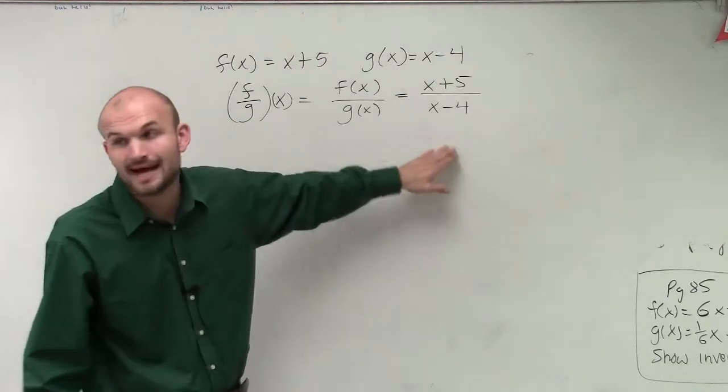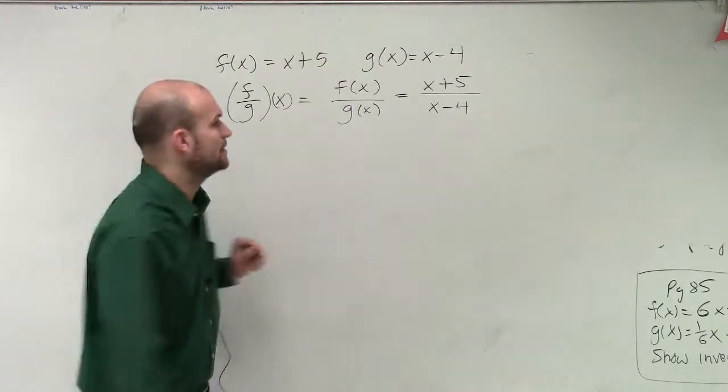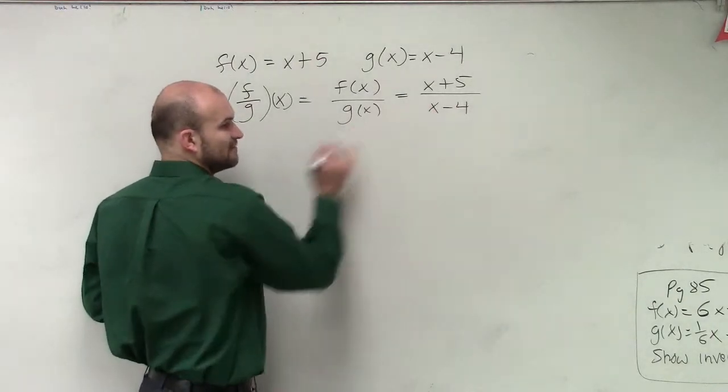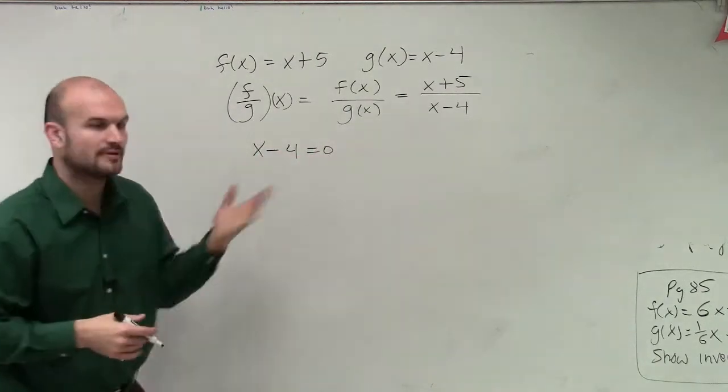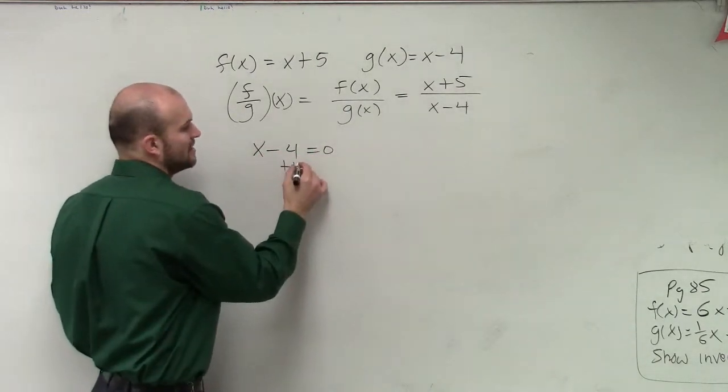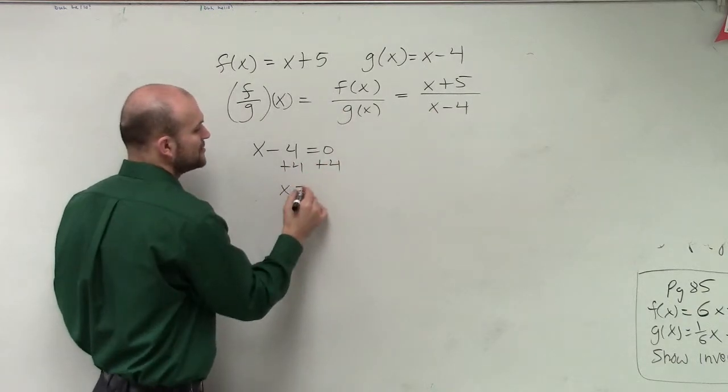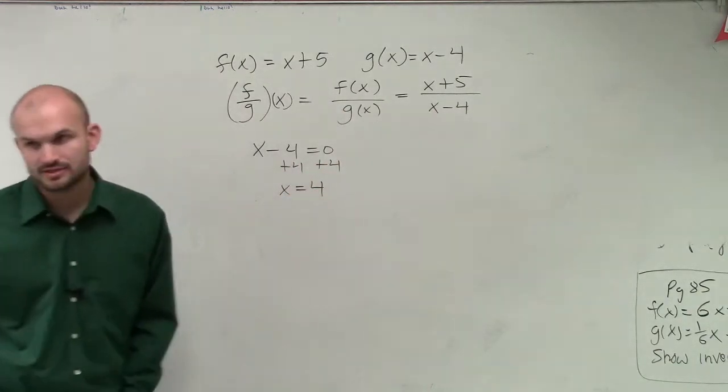And remember, our only constraint is our denominator cannot equal 0. So therefore, I'm simply going to take whatever my denominator is and set it equal to 0. Then I solve for x, and that will tell me what values make my denominator equal to 0.